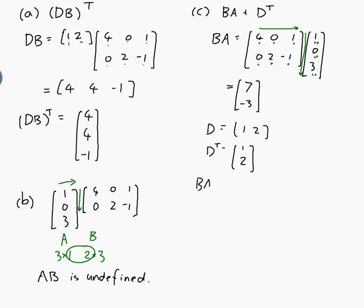So BA plus D transpose would be 7, minus 3 plus 1, 2. So that would be 7 plus 1, which is 8, minus 3 plus 2, which is minus 1.